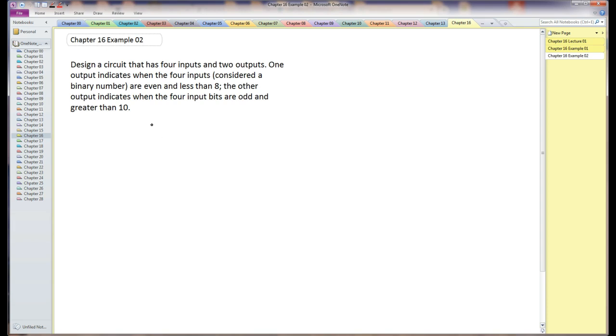So this circuit says I have four inputs and two outputs, so that's worth drawing right there. We've got to give a good name for these inputs. It will say ELT8, even and less than 8, and odd GT10. Good enough names.